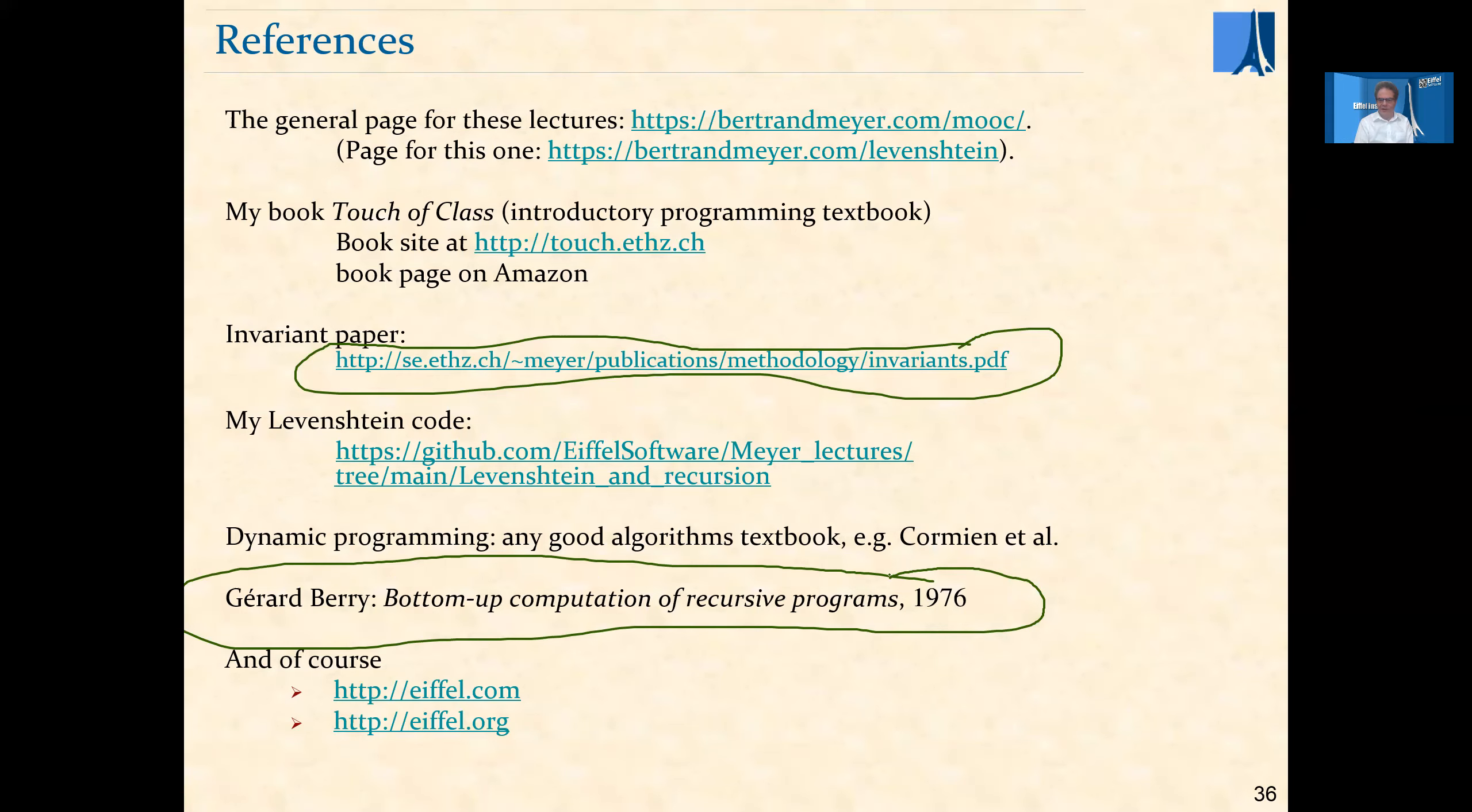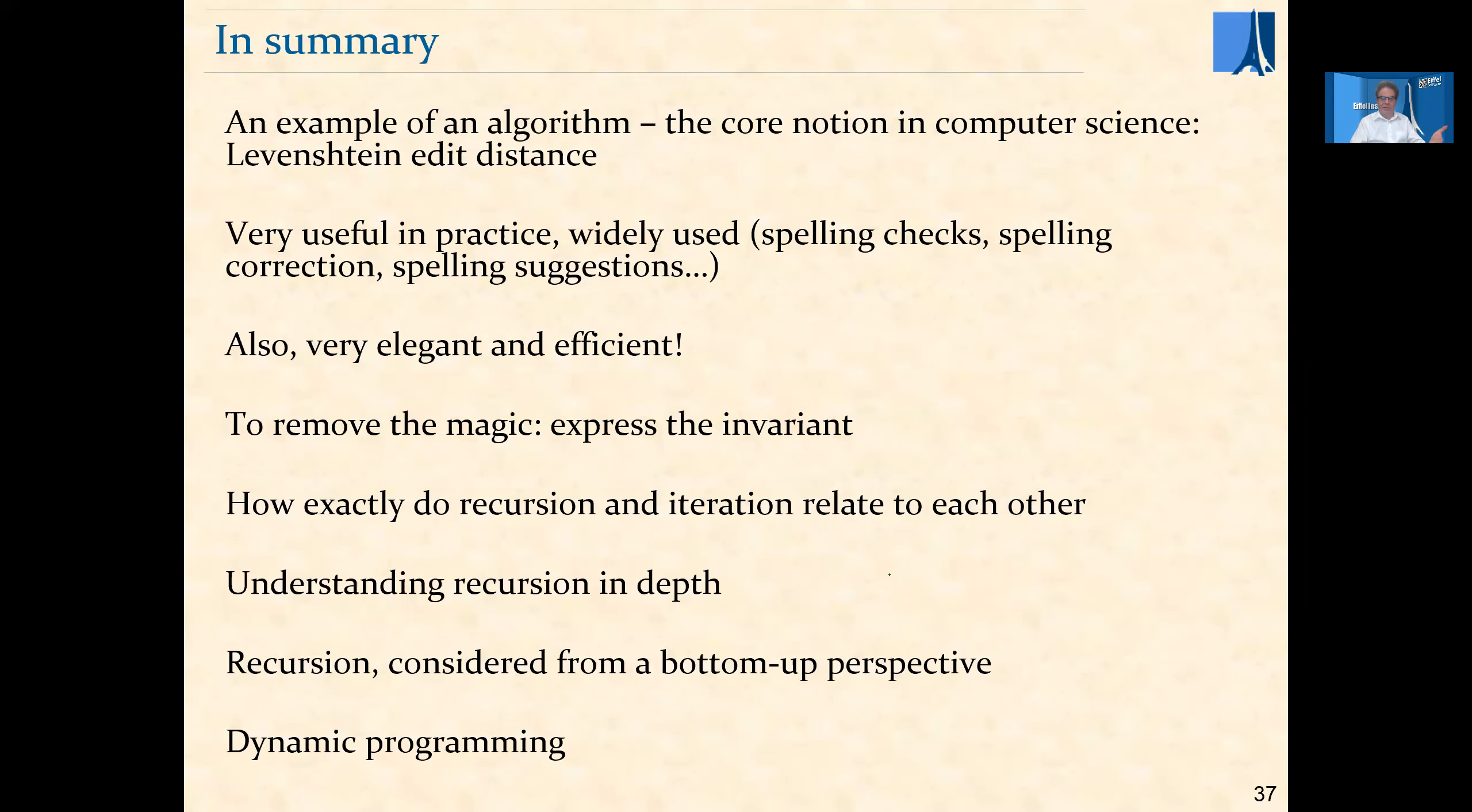For dynamic programming, again, I'm not specifying any particular book because any good algorithms textbook will have a good description of dynamic programming. For example, the well-known textbook by Cormen, Rivest and others. On the notion of bottom-up computation of recursive programs, there's a very interesting, although certainly not recent, 45-year-old article by Gérard Berry. Again, you just Google for the title, you'll find it in various places on the web. It's a really brilliant paper, which explains in very simple problems, in very simple terms, how to compute a recursive function bottom-up. And of course, you have the Eiffel.com site, which is about the Eiffel Studio product, and Eiffel.org, which is about the Eiffel approach with lots of documentation, white papers and such.